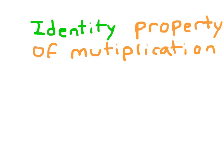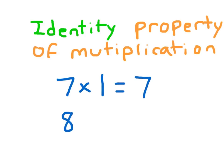This here is the identity property of multiplication. What the identity property of multiplication involves is: when you multiply any number by 1, the product is equal to that number. So if we have 7 multiplied by 1, we still get 7. 8 times what number equals 8? 8 times 1 equals 8. That's an example of the identity property of multiplication: when you multiply any number by 1, the product is equal to that number.